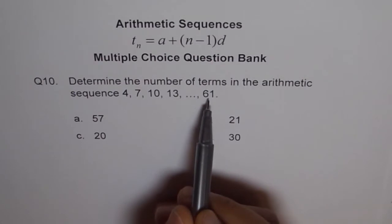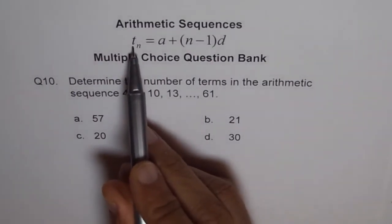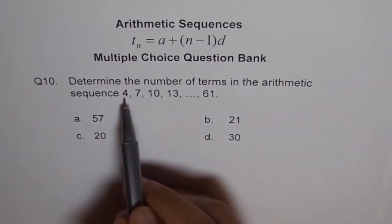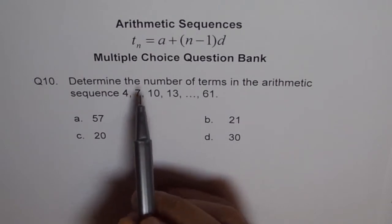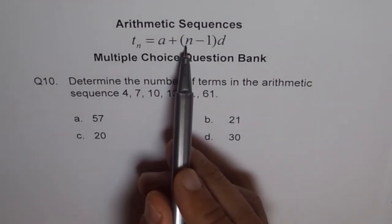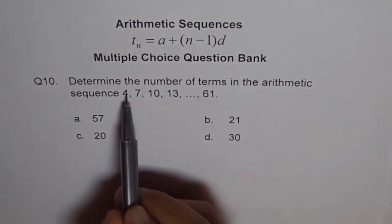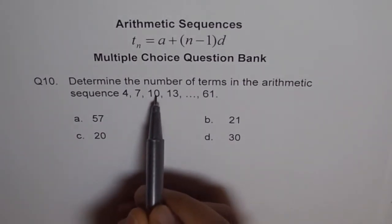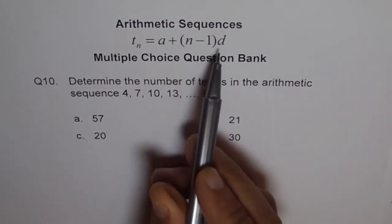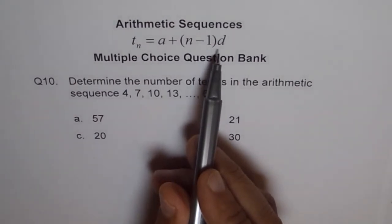So we know what Tn is. Tn is 61, so we'll write 61 here. a is 4 for us, the first term. n minus 1, we need to find n. And what is d? 7 minus 4 is 3, 10 minus 7 is 3. So the common difference, d, is 3.